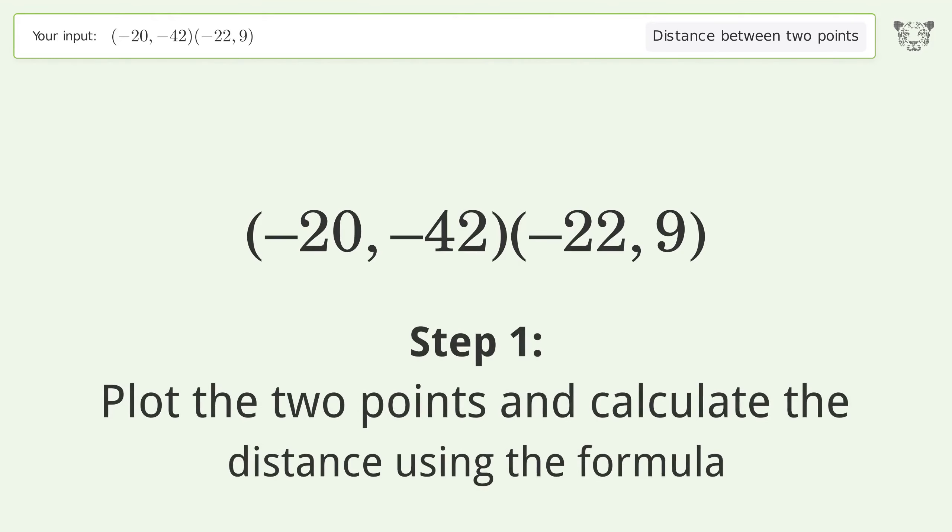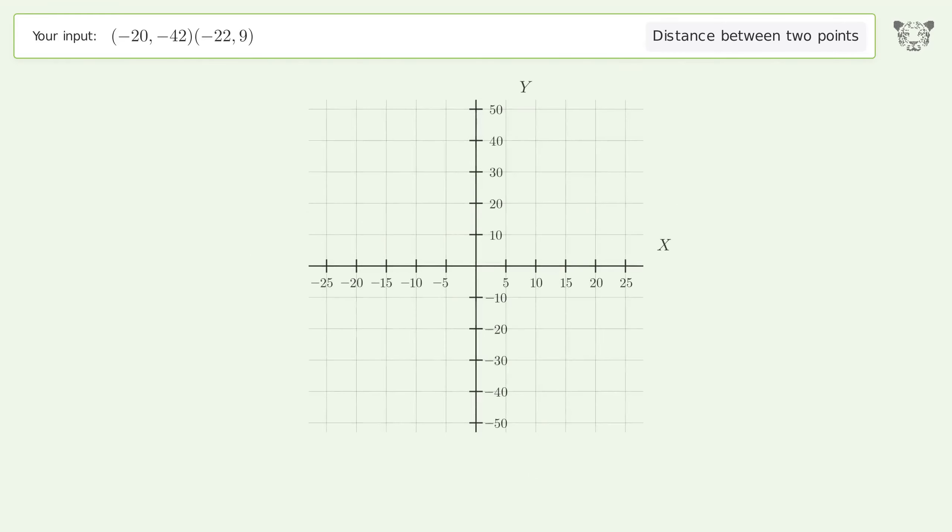Plot the two points and calculate the distance using the formula. The coordinates of point 1 are x1 equals negative 20 and y1 equals negative 42. The coordinates of point 2 are x2 equals negative 22 and y2 equals 9.